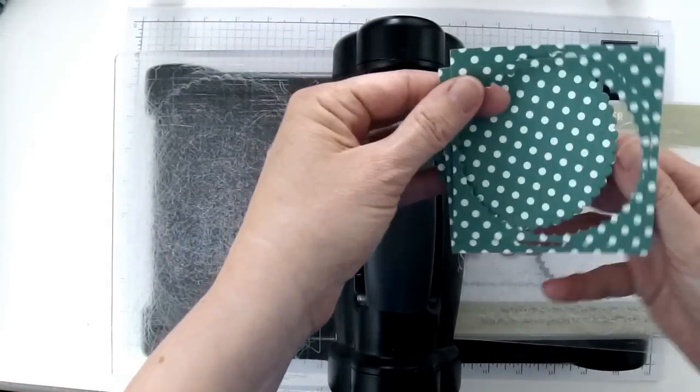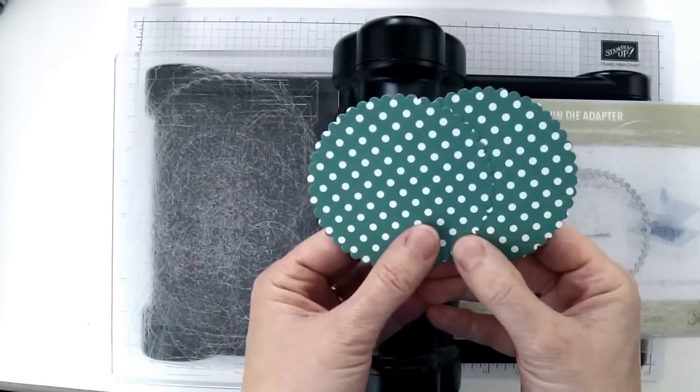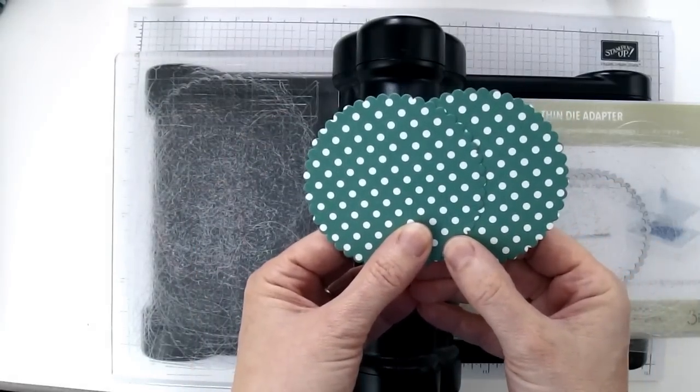Then you're going to have these outer pieces which you can throw out and you're going to have two scalloped circles which you're going to use with the dress template.